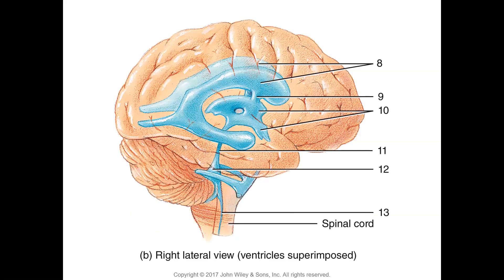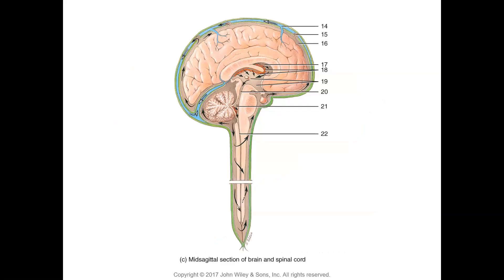This right lateral view of the brain has the ventricles superimposed — it is a 3D reconstruction model. Number eight shows the two lateral ventricles, number nine is the interventricular foramen connecting the lateral ventricles to the third ventricle (number ten). Number eleven is the cerebral aqueduct connecting to the fourth ventricle (number twelve). The medial and lateral apertures allow CSF to exit into the subarachnoid space, with some CSF going down into the central canal of the spinal cord.